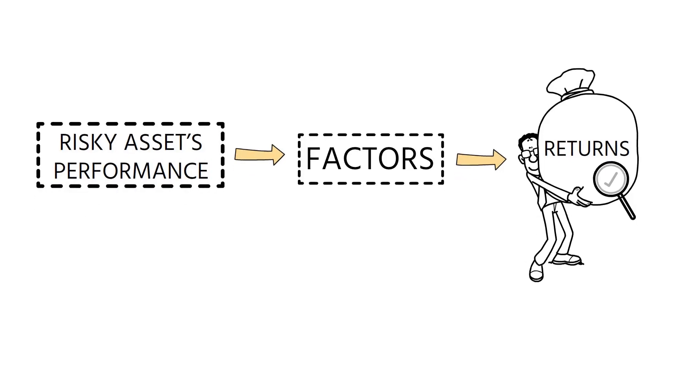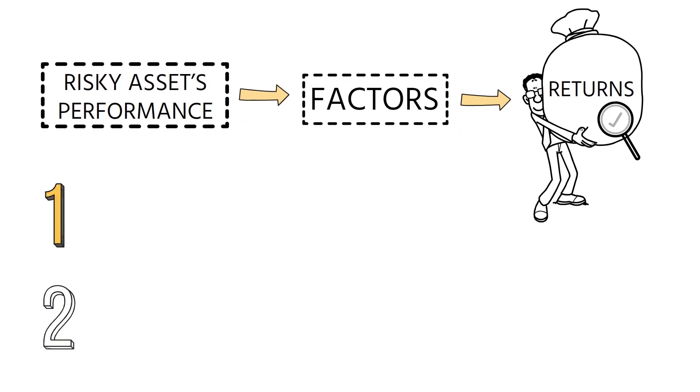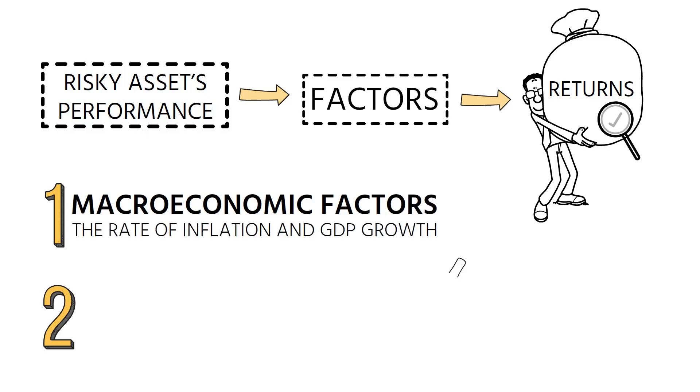There are mainly two types of factors in investing. One, macroeconomic factors, such as the rate of inflation and GDP growth, can help explain returns across multiple asset classes, including equity and bond markets.